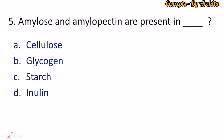Question 5: Amylose and amylopectin are present in which of the following? When I discussed polysaccharides, I covered cellulose, glycogen, starch, and inulin. Starch consists of amylose and amylopectin. Amylose contains alpha-1,4 glycosidic linkage, and amylopectin — being the branched form — contains alpha-1,6 glycosidic linkage. So the correct option is starch.